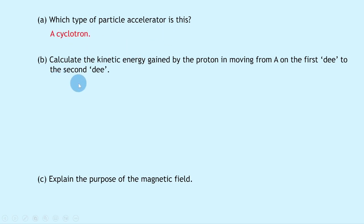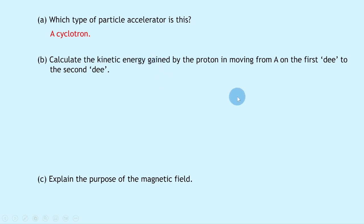Part (b) asks to calculate the kinetic energy gained by the proton moving from A on the first D to the second D. The kinetic energy gained equals the change in kinetic energy. Because the particle starts from rest at point A, the initial kinetic energy is zero, so the work done is essentially equal to the final kinetic energy gained.